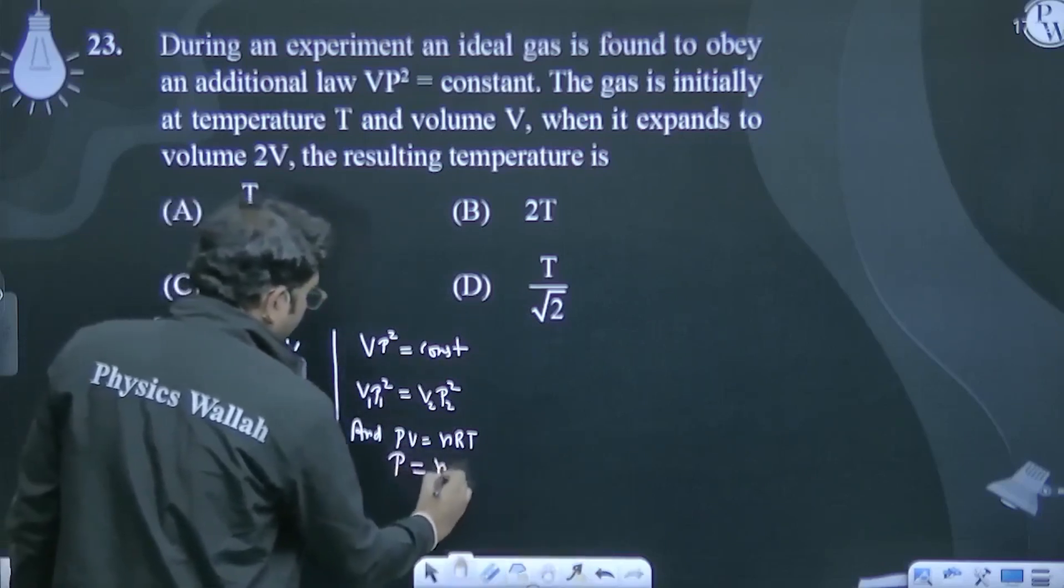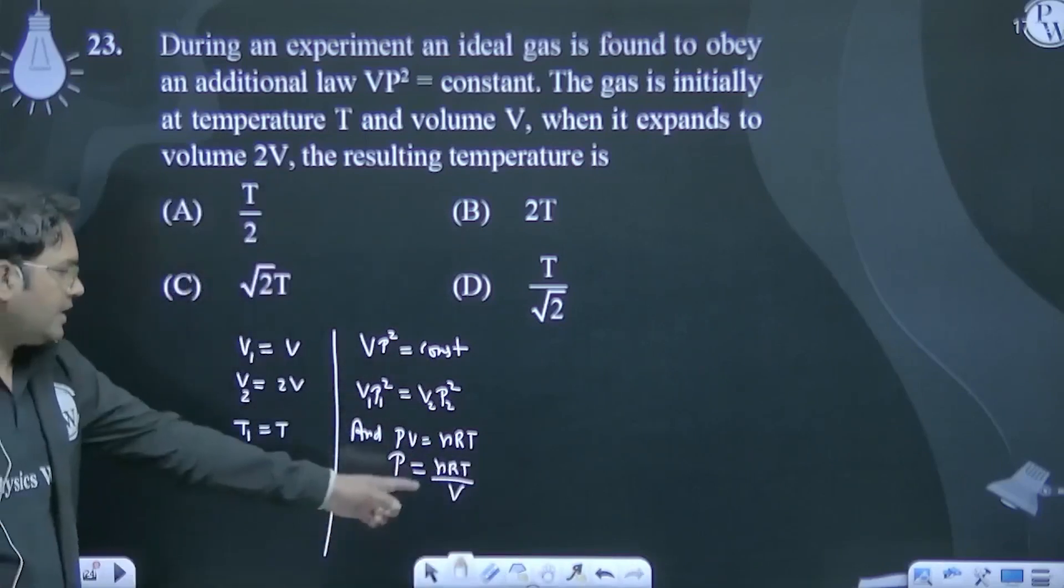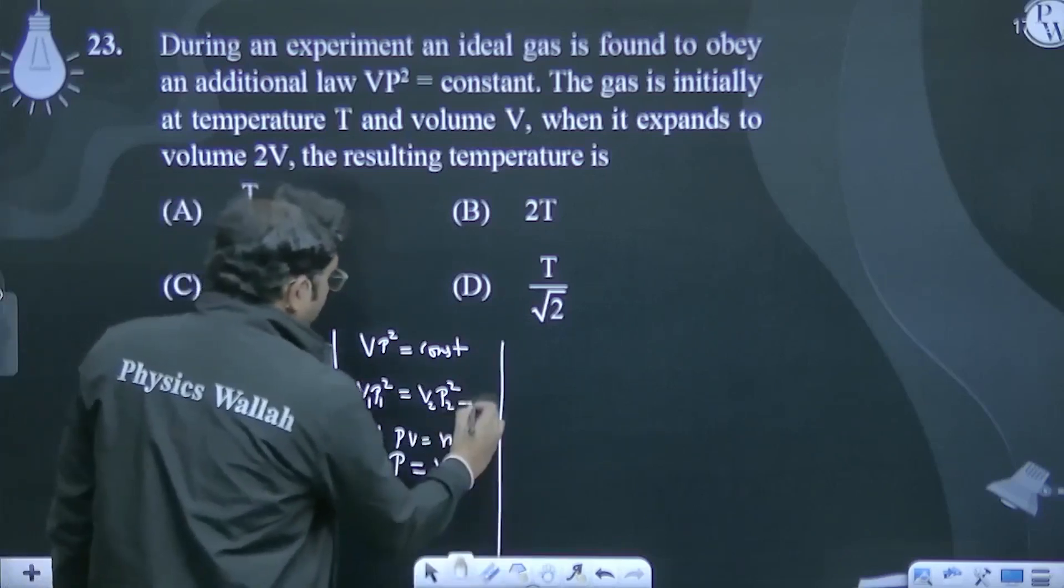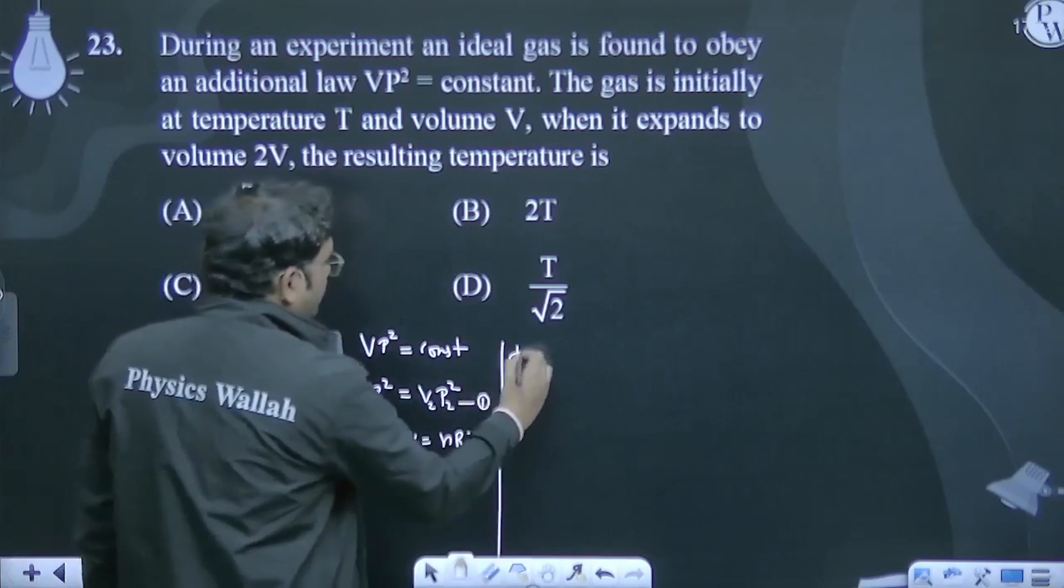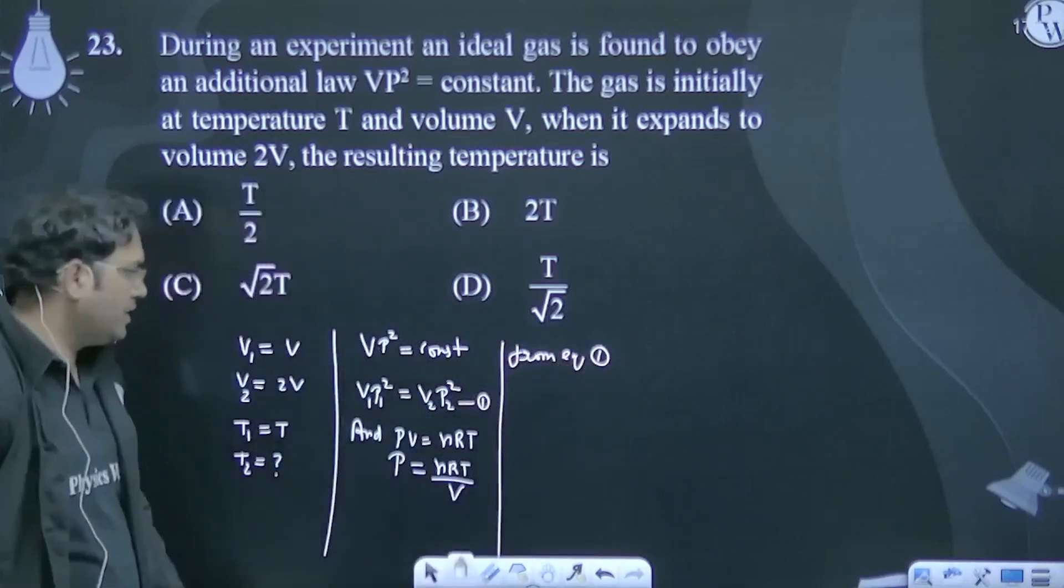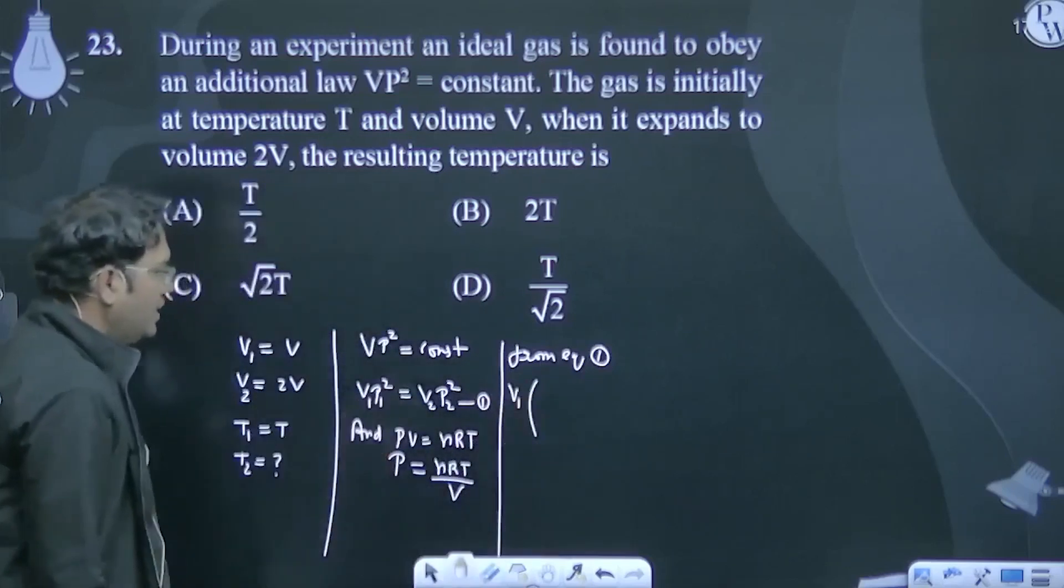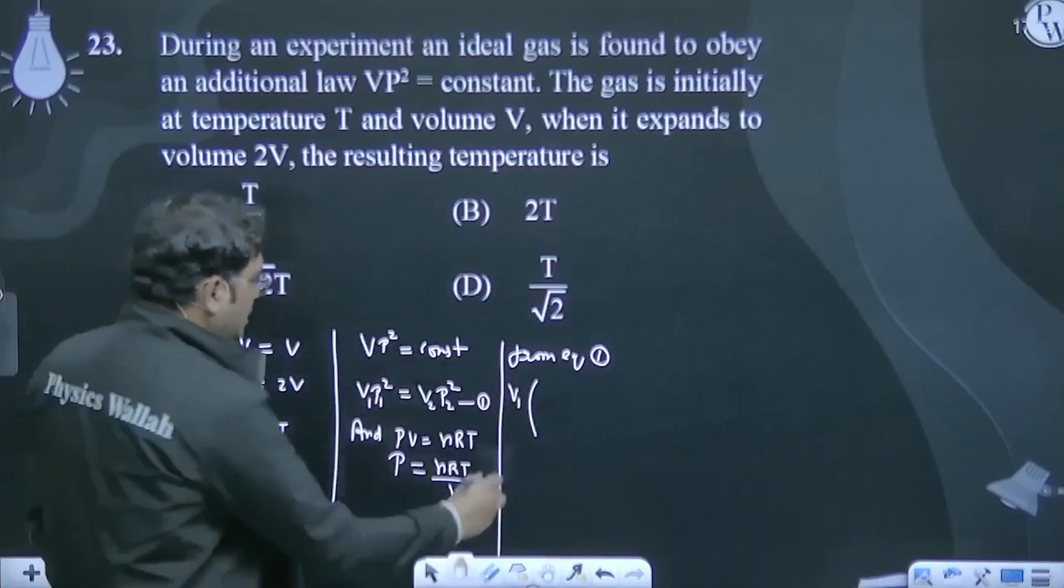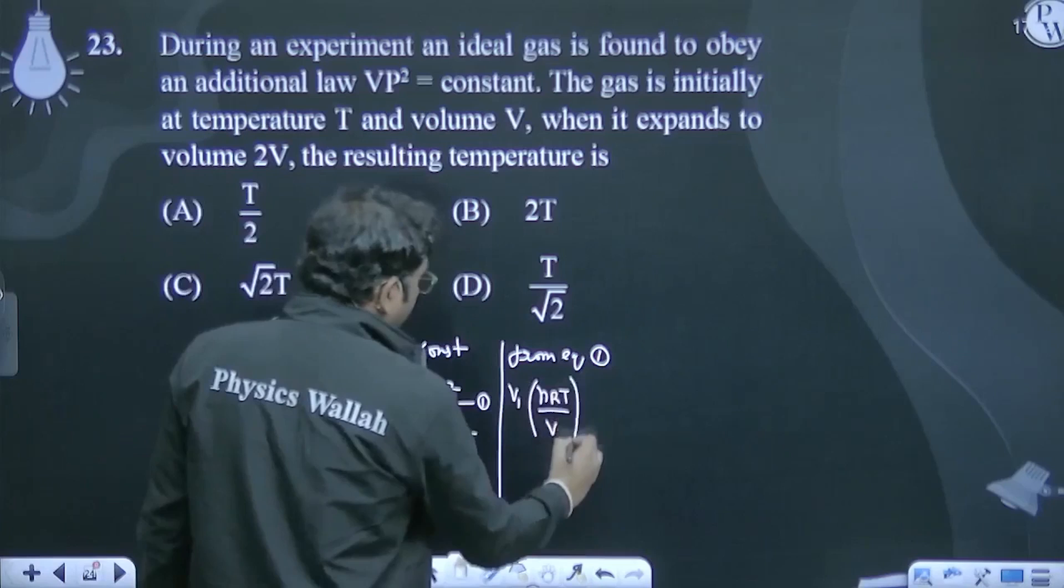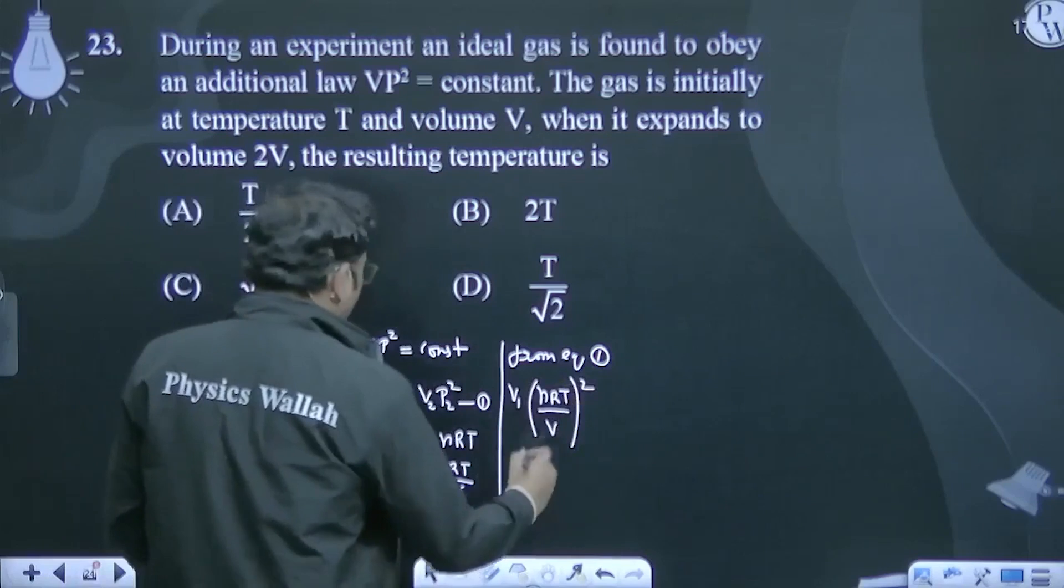So P equals nRT divided by VP². Therefore, the equation becomes: V₁P₁² equals nRT₁ divided by V₁P₁², and V₂P₂² equals nRT₂ divided by V₂P₂².